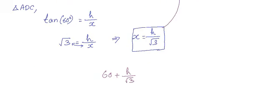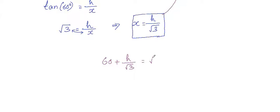So just subtract h by root 3 on both sides. Here we need to find the h value, that's the reason we are subtracting h by root 3 on both sides. If we subtract that, we'll get 60 equals root 3h minus h by root 3.